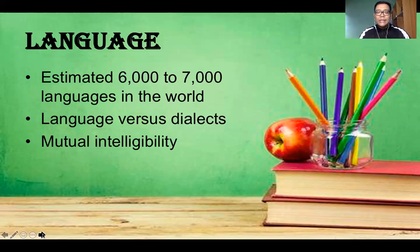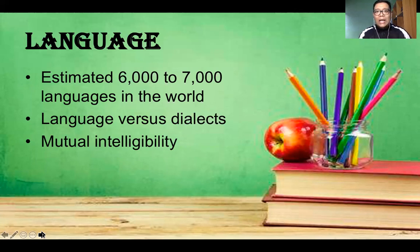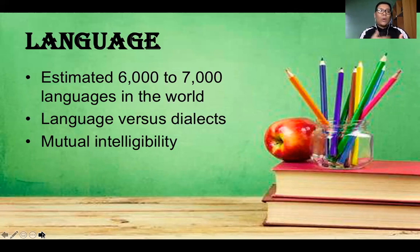What matters most is that language is used for mutual intelligibility. We use language in a specific speech community because the symbols and codes present in that language could be used for us to understand each other and achieve intelligibility. Language is also our primary tool to express our emotions, ideas, or thoughts within that speech community. We also have socialects — dialects spoken by specific social groups — which have been widely used also by people outside their speech communities.